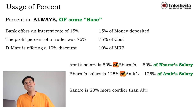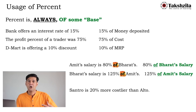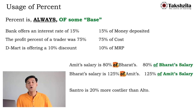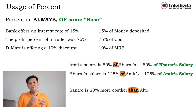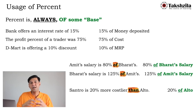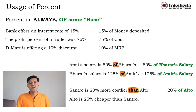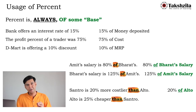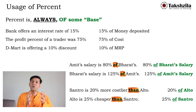For 'more/less' comparisons, watch the word 'than.' 'Santro is 20% more costly than Alto' — the base is Alto, so the extra cost is 0.2 × Alto's price. Reversing: 'Alto is 25% cheaper than Santro' — now the base is Santro, so the saving is 0.25 × Santro's price. The words 'of' and 'than' indicate which value is the base.